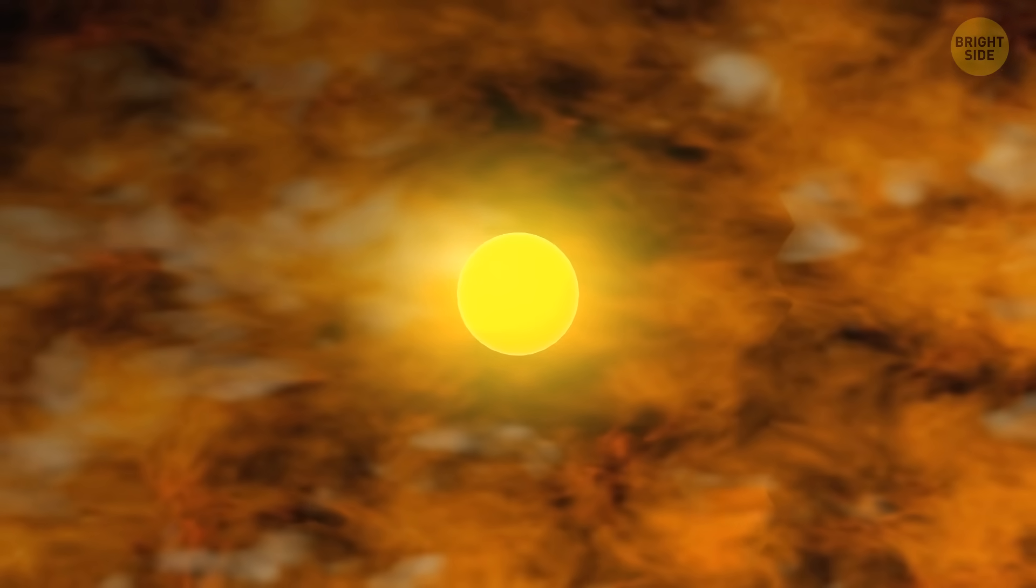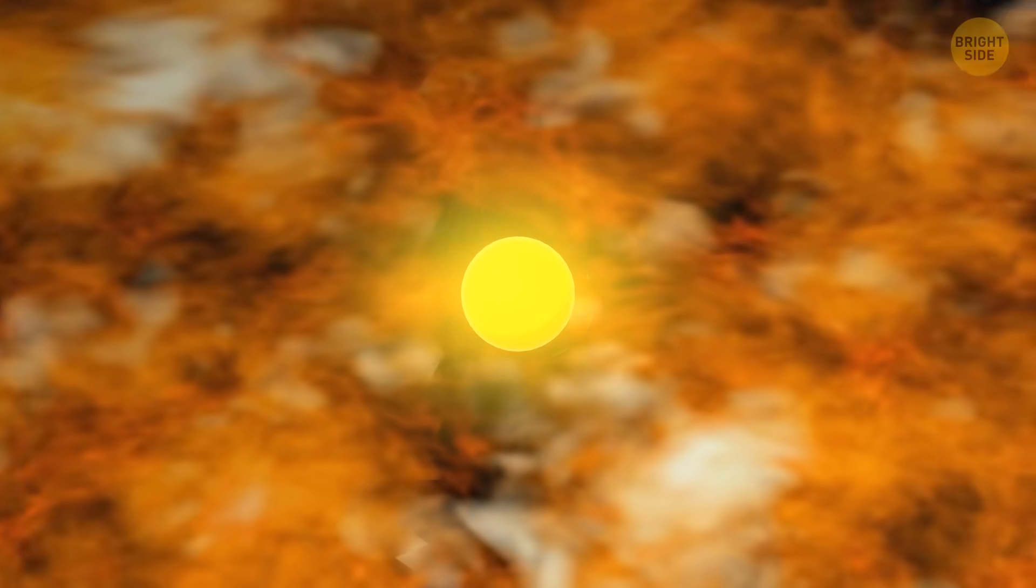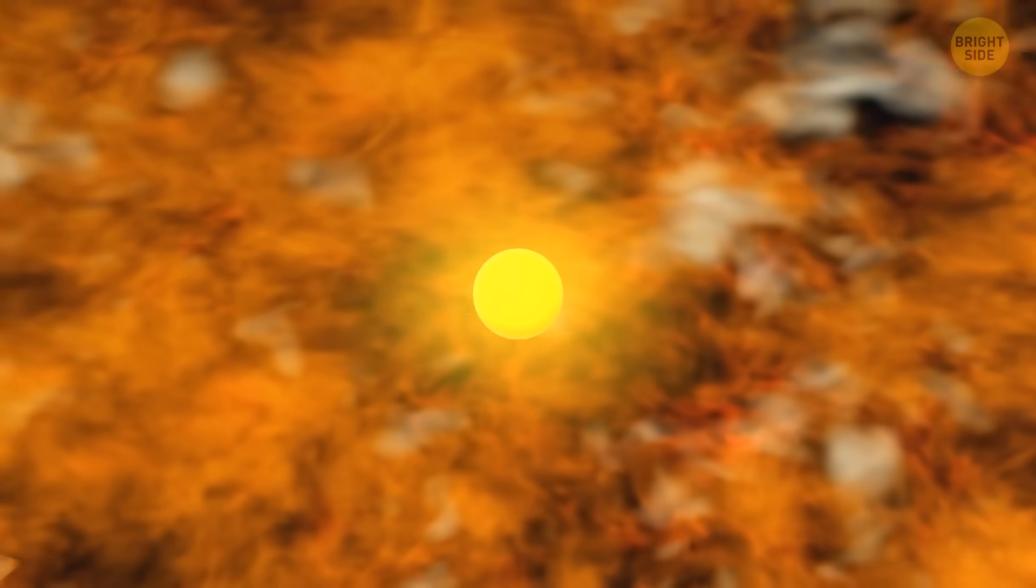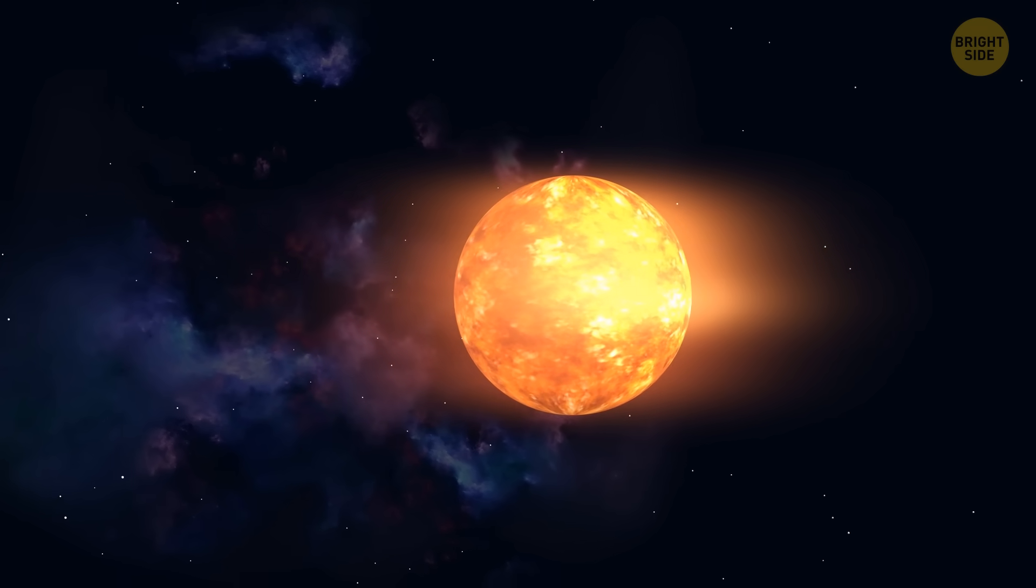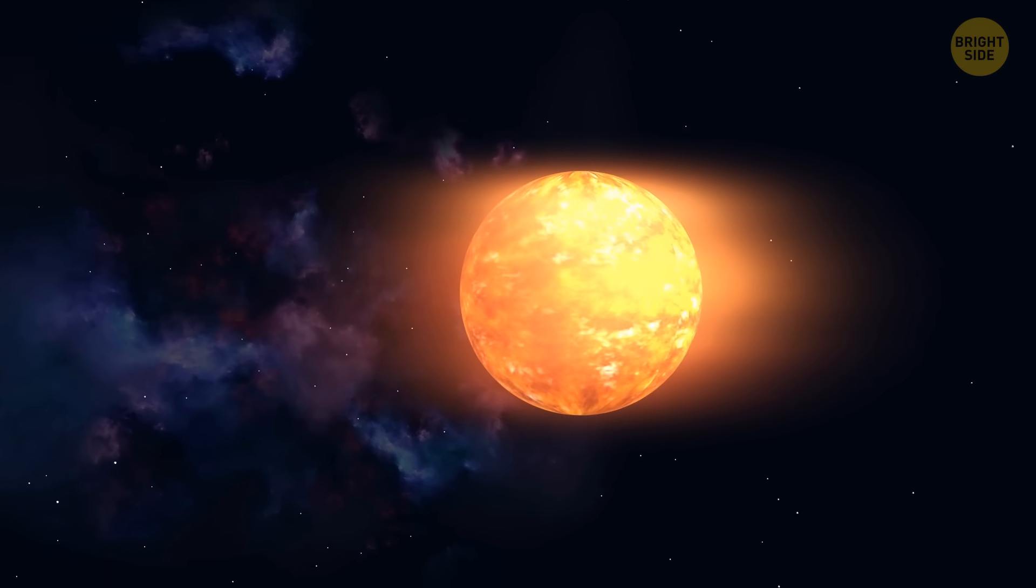You see, when the core of a star runs out of hydrogen, it starts contracting under the weight of its own gravity. But some hydrogen fusion continues in the upper layers. While the core contracts, it heats up. This causes the upper layers of the star to heat up too and expand. The radius of the star increases.